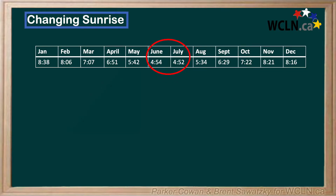Let's look at June and July for example. In one whole month, the sunrise time only changed two minutes. Whereas if we look at October to November, we notice a whopping hour difference. This actually makes this a perfect use case for a sinusoidal model.